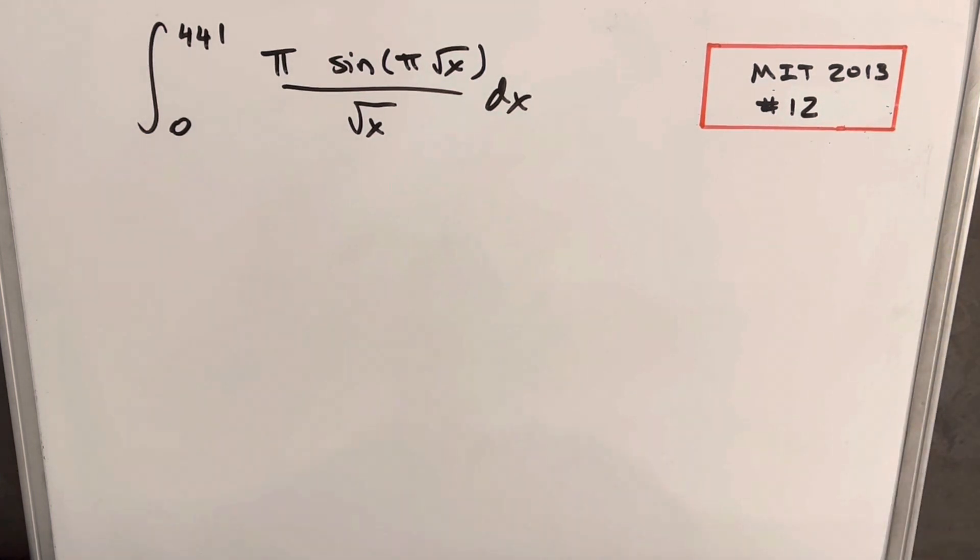I'm on problem 12, so we have the integral from 0 to 441 of pi sine pi square root of x over square root of x.